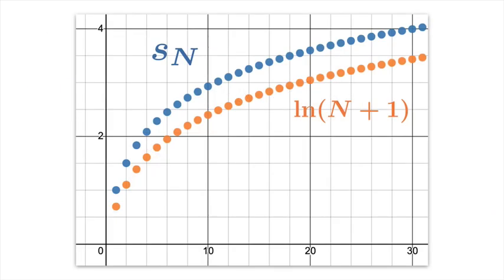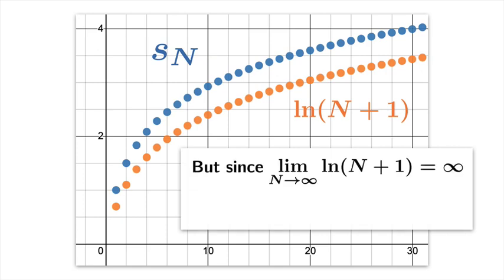Now you could graph the sequence of partial sums and compare it to ln(n+1). And this isn't surprising because we just proved that sₙ is greater than ln(n+1). But we notice that ln(n+1) diverges to infinity. We know that it marches off to arbitrarily large values. And so that limit is infinite.